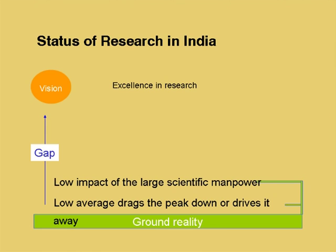What is the consequence of this? The low average drags the peak down or drives it away. Since the average level of skill or impact is less, people who want to pursue research with very great intensity tend to leave the place. It is very important to raise the average level. The people who are involved in research are capable of better skills, but the level of preparation is not adequate. We need to address why the level of preparation is inadequate and what is meant by preparation for research.